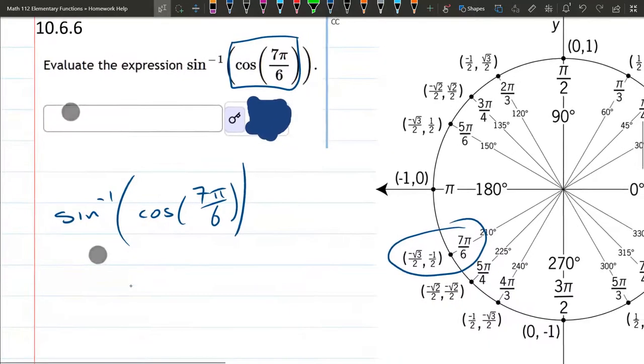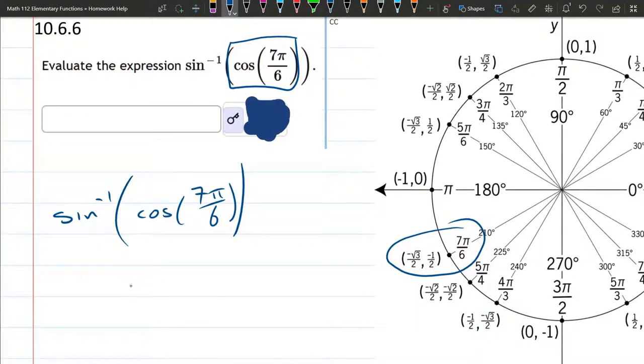So cosine 7π over 6. Cosine is an x value, so we're grabbing that one right there. We have negative square root 3 over 2.